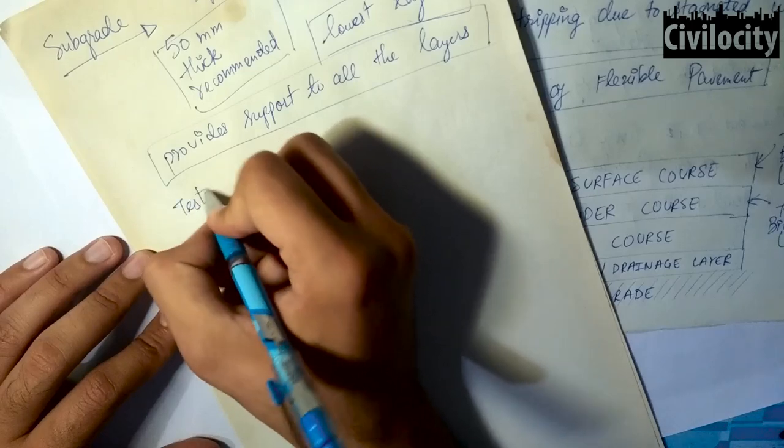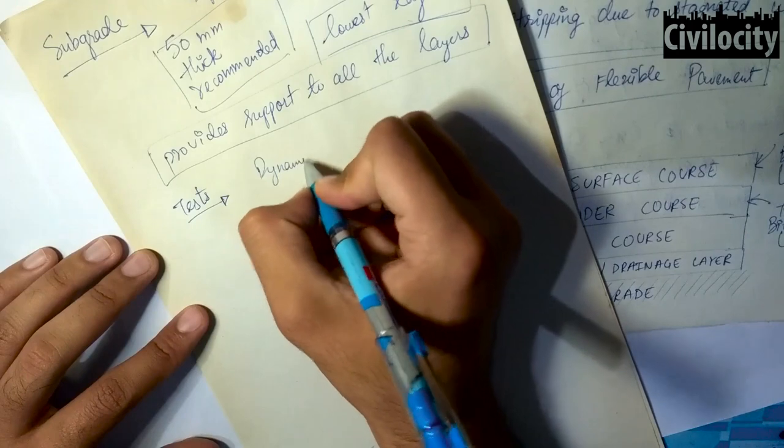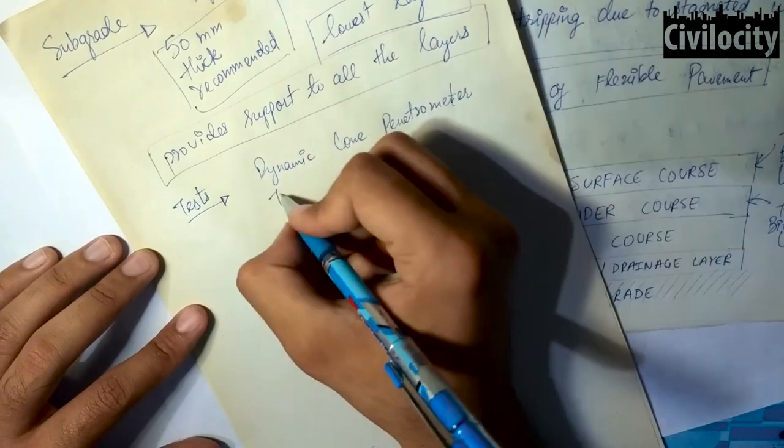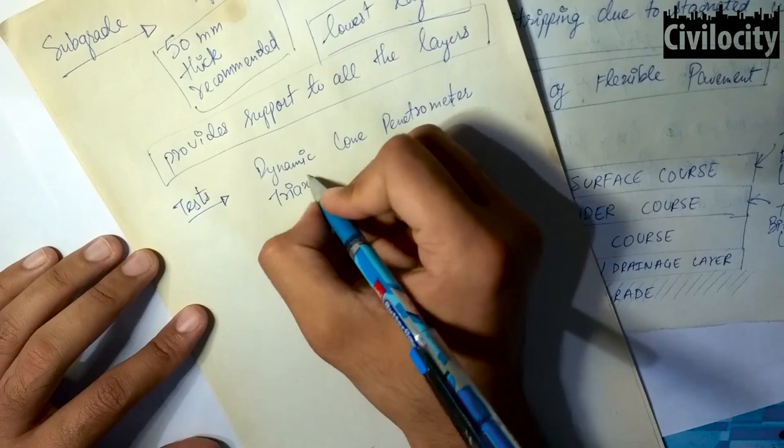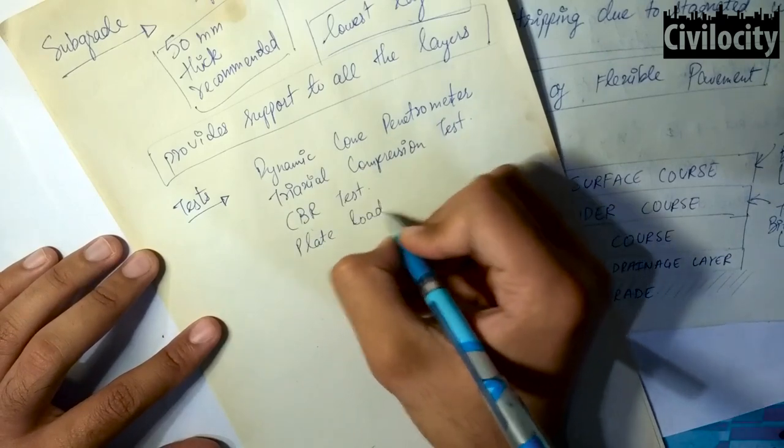There are few tests to check the adequate strength of sub-grade soil and these are the dynamic cone penetrometer tests, the tri-axial compression test, CBR tests, and plate load tests, in which the CBR and plate load tests are very famous.